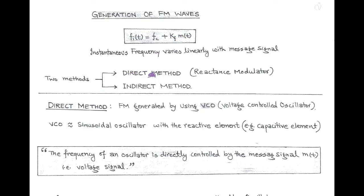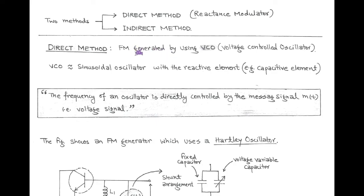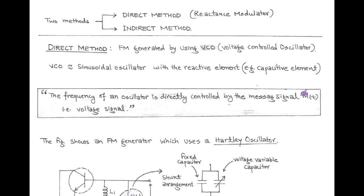First we talk about the direct method of generation of FM wave. This is also called reactance modulator. In this method, the FM wave is generated by using a device called voltage controlled oscillator, or VCO. VCO is basically a sinusoidal oscillator having a capacitor as a reactive element. In the voltage controlled oscillator, the frequency is directly controlled by the message signal — that is, a voltage signal — because the message signal is typically measured in volts.